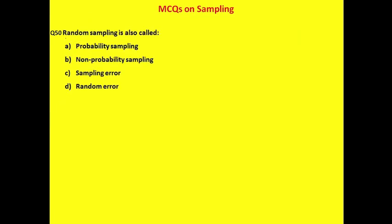The difference between the statistic and the parameter is called the sampling error — correct answer option B. The standard deviation of a sampling distribution of a statistic is called the standard error — correct answer option C. The distribution found by all possible values of the statistics is known as the sampling distribution — correct answer option C. In probability sampling, the probability of selecting an item from the population is known and is non-zero — correct answer option B. Random sampling is also known as probability sampling — correct answer option A.